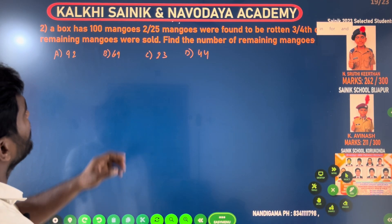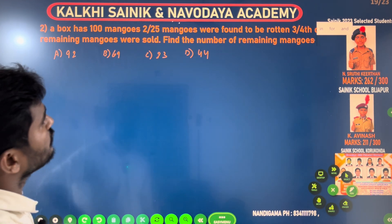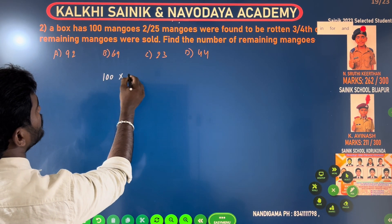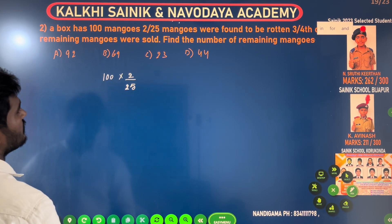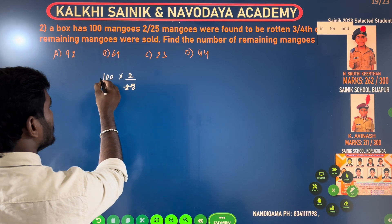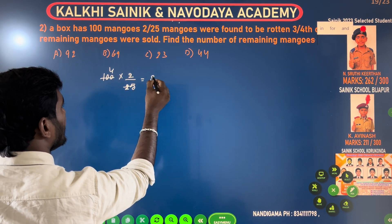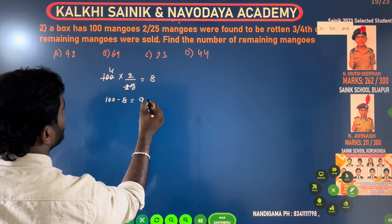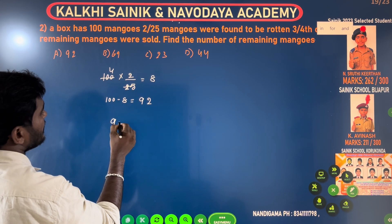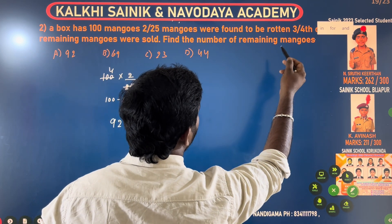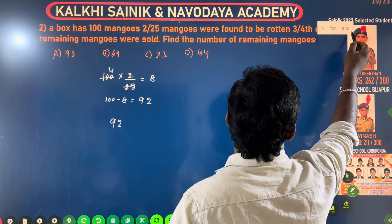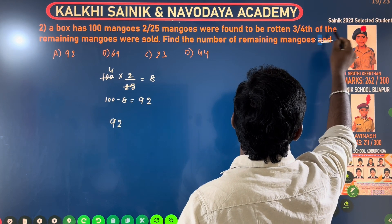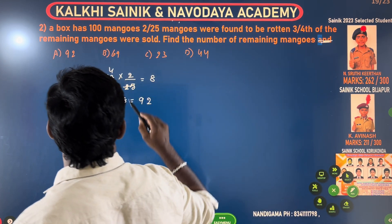The box has 100 mangoes. 2 by 25 mangoes were found to be rotten. The box has 100 mangoes. If 8 mangoes are rotten, that leaves 92 mangoes. The remaining mangoes were found to be rotten.